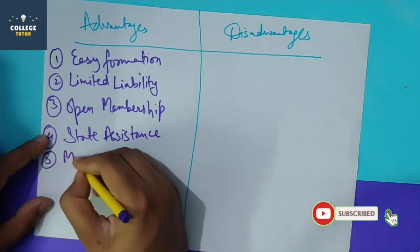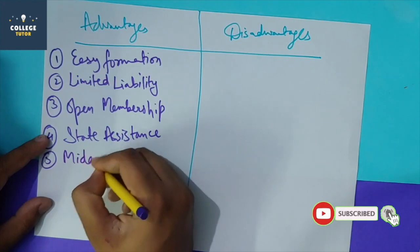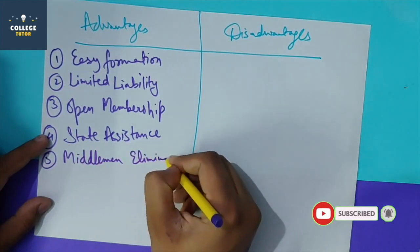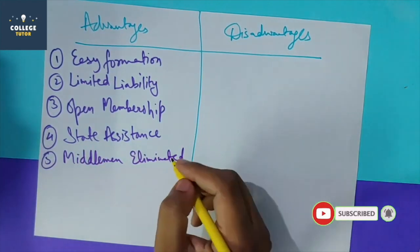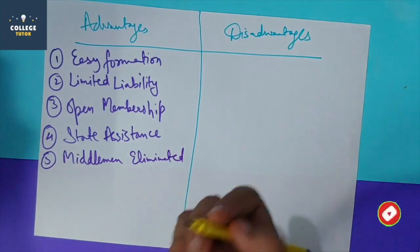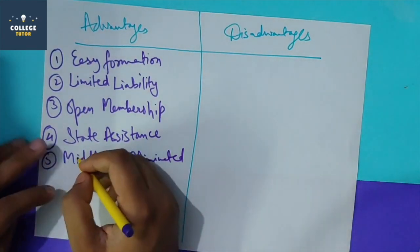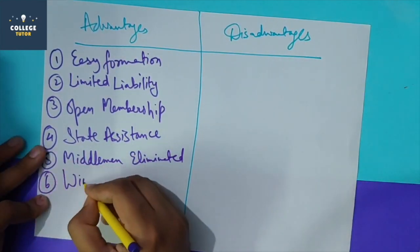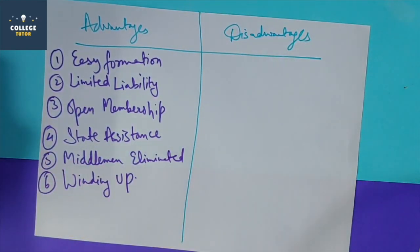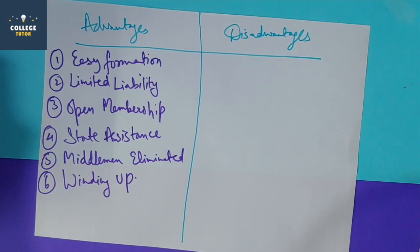The fifth advantage is the elimination of middlemen - since the society works directly, middlemen are removed and there is no harm from them. Another advantage is stability - cooperative society has a stable life. Even if a member leaves or a head member changes, the society will continue. That is an advantage of cooperative society.